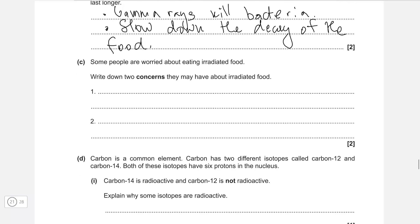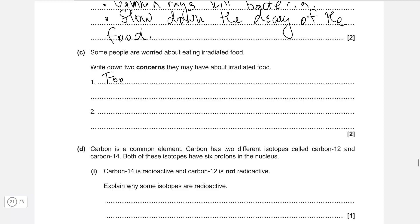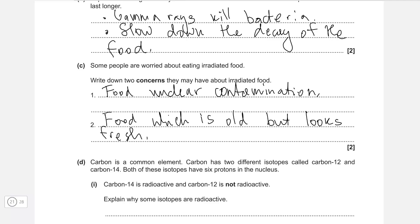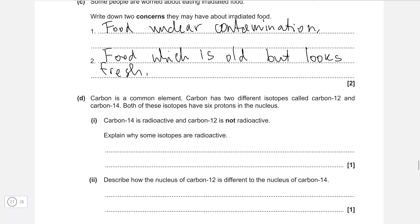Some people are worried about eating irradiated food. Write down two concerns. One of the things that people are typically worried about is food nuclear contamination. And the other one is having food which is old but looks fresh, because some bacteria may have been killed, which will slow down decay. So it can look really fresh but be actually quite old.